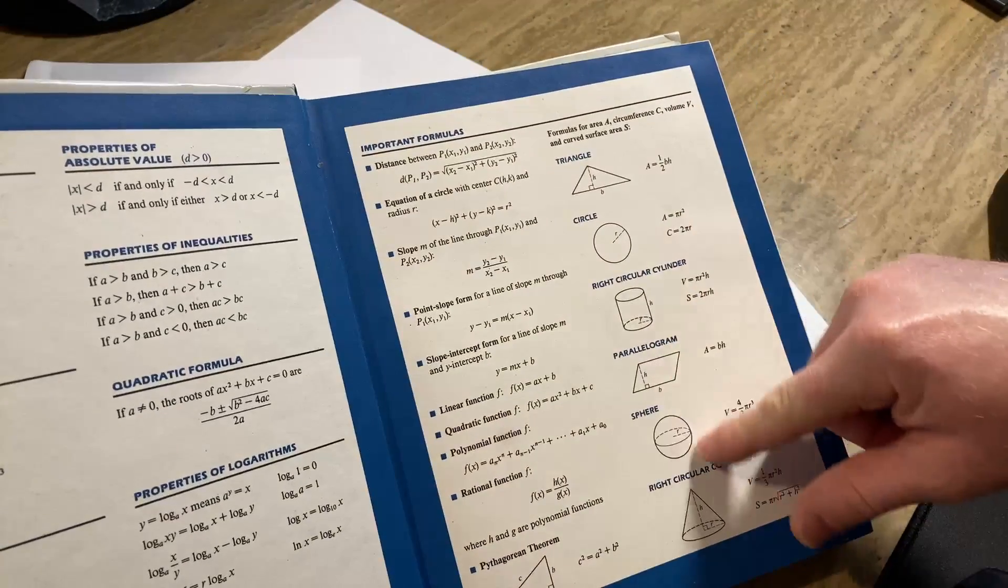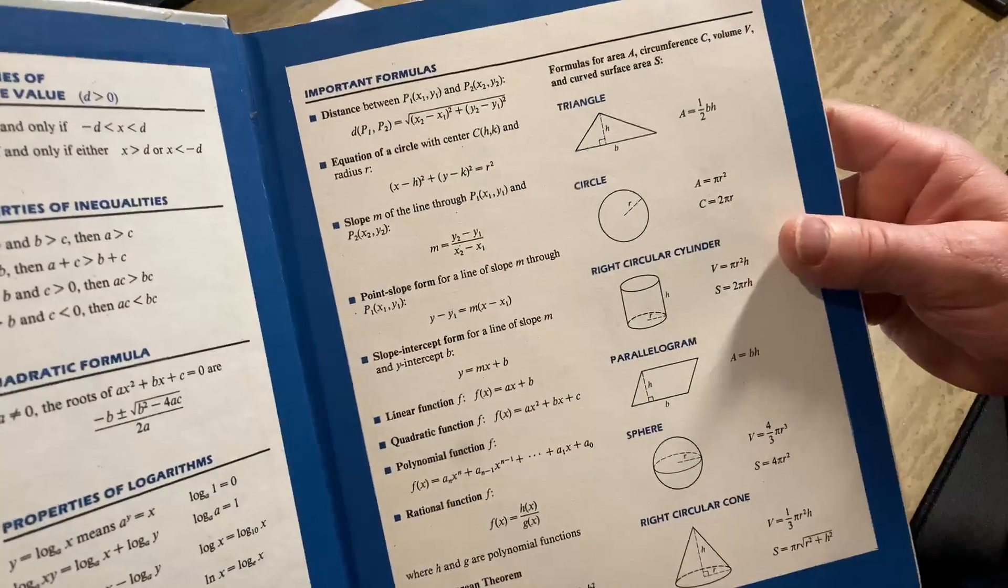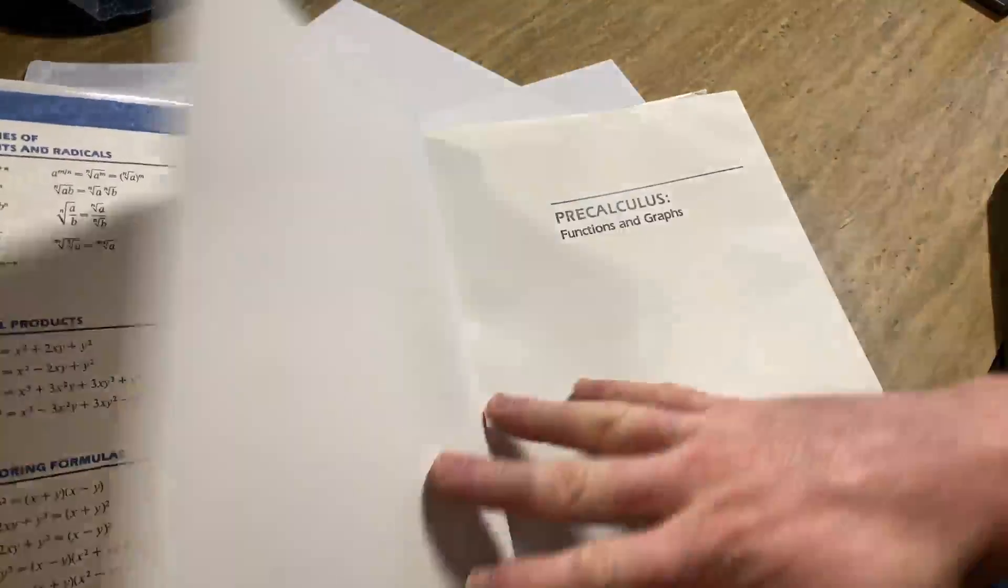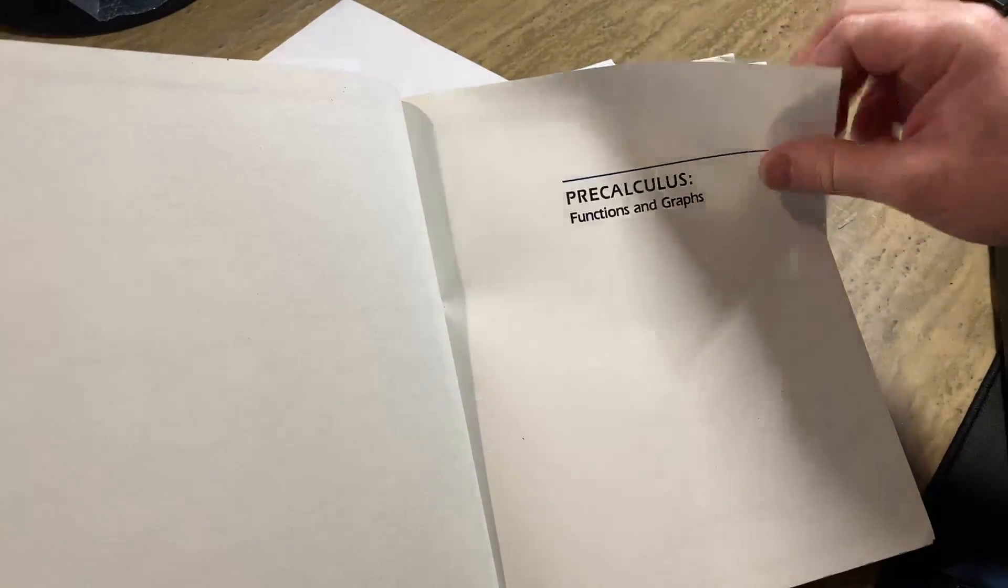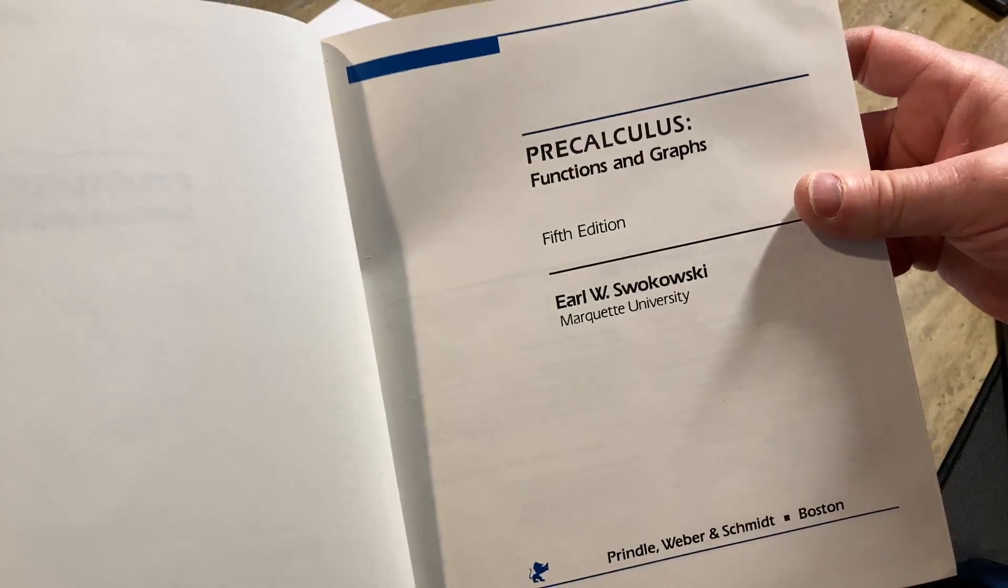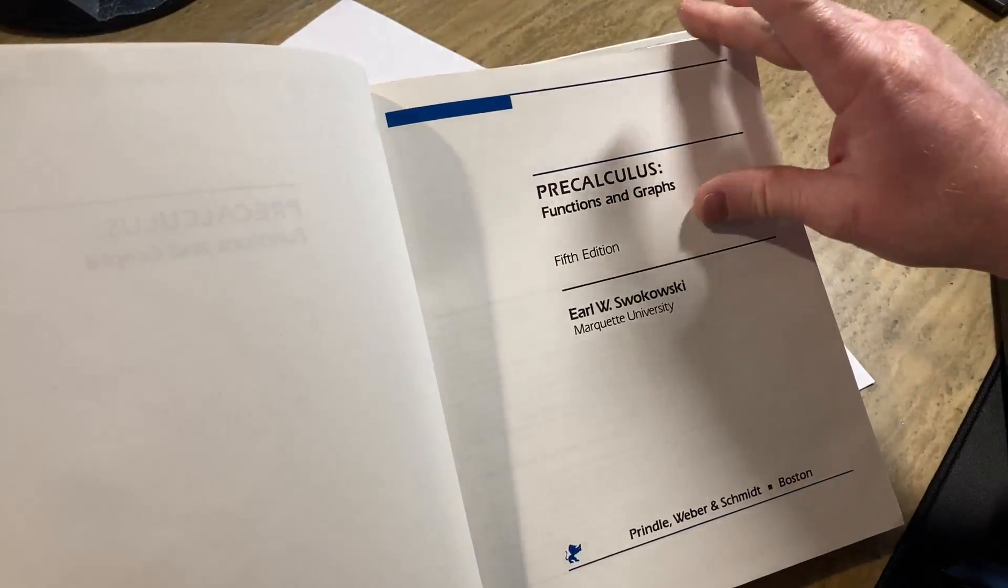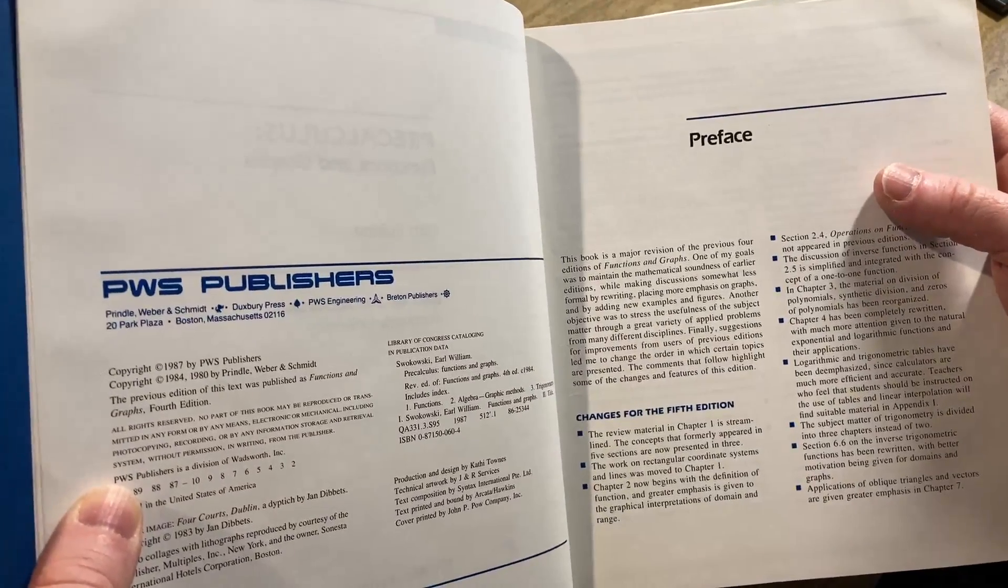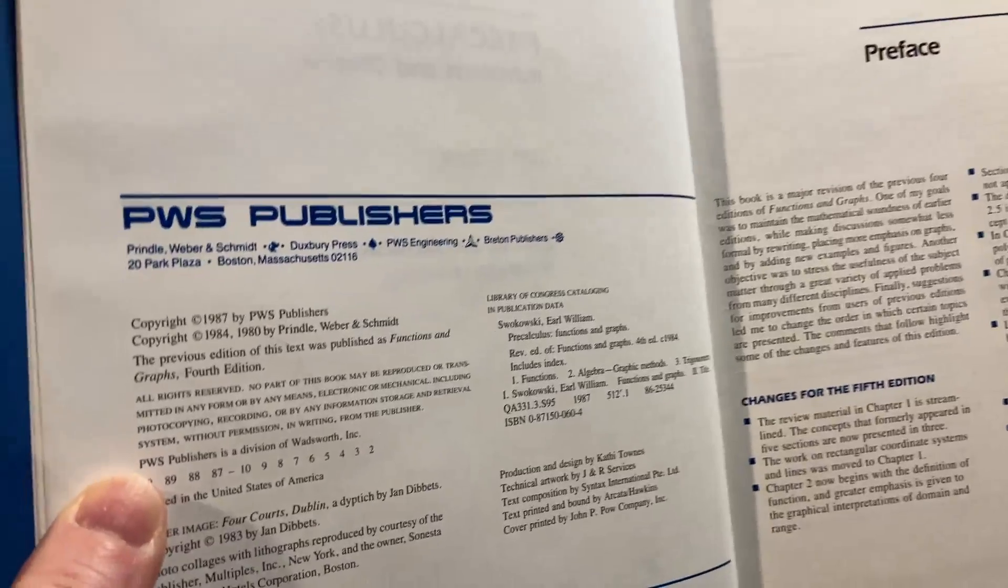Here you have a couple others for geometric figures. These come up sometimes in calculus. Precalculus Functions and Graphs by Earl Swokowski, Marquette University. This is a good book for self-study. You can buy a book like this and sit down with a piece of paper and a pencil and work through the math.